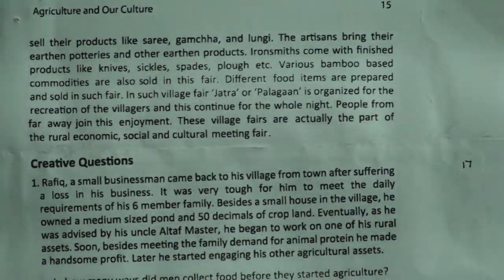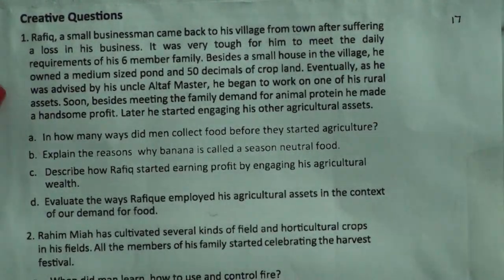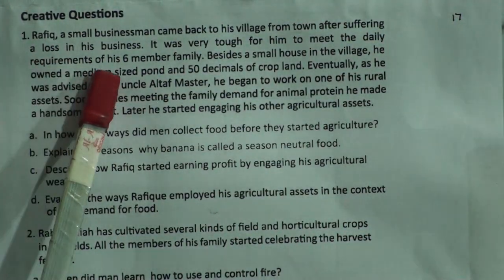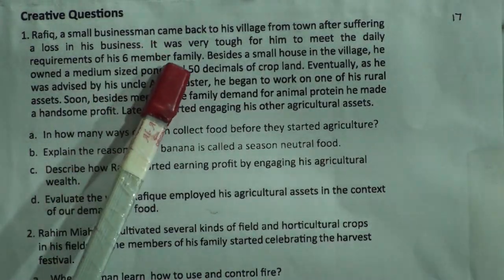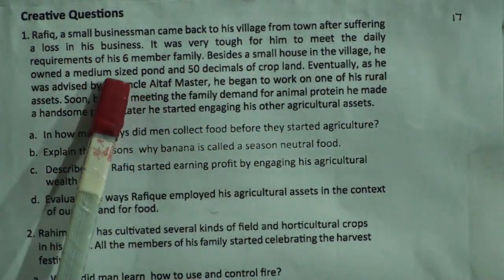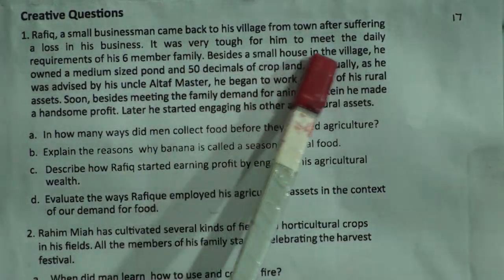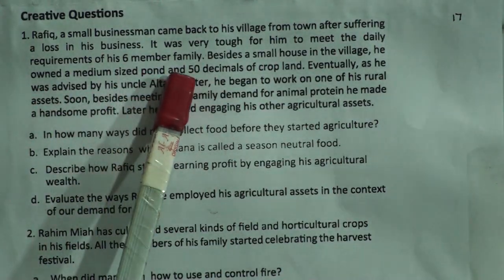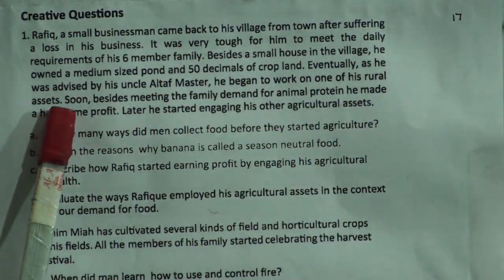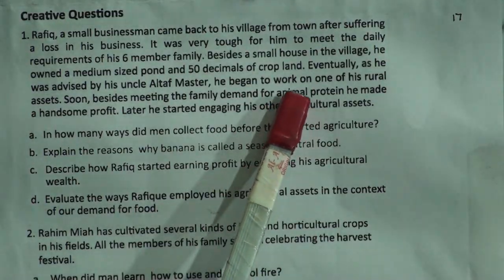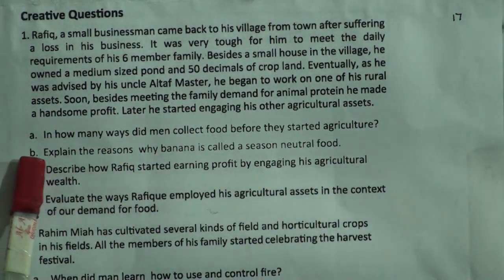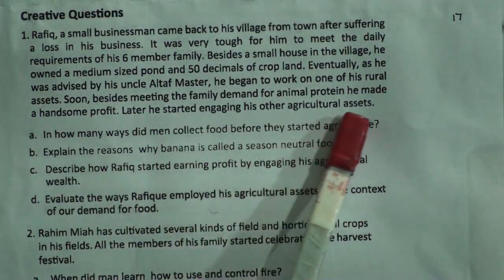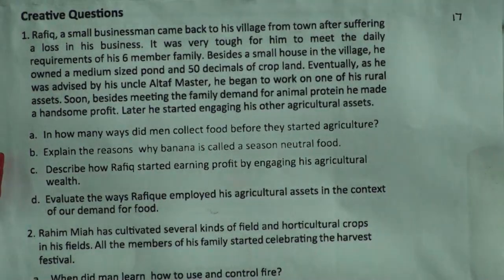Now we will do our creative questions from the book. The stem: Rafiq, a small businessman, came back to his village from town after suffering a loss in his business. It was very tough for him to meet the daily requirements of his six-member family. Besides a small house, he owned a medium-sized pond and 50 decimals of cropland. As advised by his uncle, he began to work on one of his rural assets and soon made a handsome profit by meeting the family demand for animal protein.